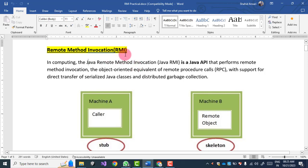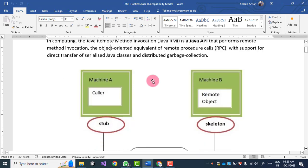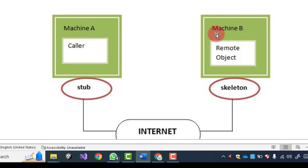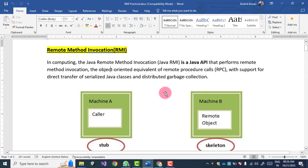RMI is one of the concepts available in Java. It provides a set of APIs that performs Remote Method Invocation. We have a remote machine — machine B — and there is machine A, which is the caller machine. Machine A will invoke, meaning it will call the remote method or remote object that is available on machine B. This is the basic definition of RMI.